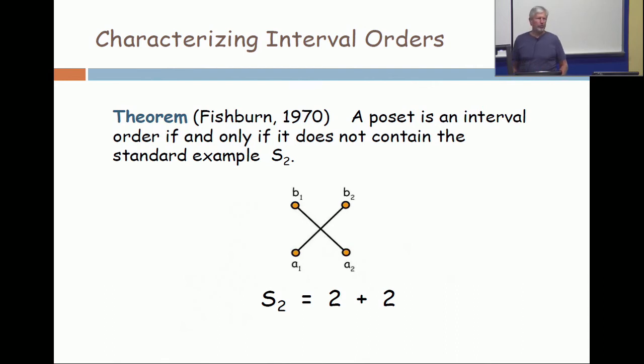And that's denoted S2, also denoted 2 plus 2. It's denoted 2 plus 2 because if you take two chains like this and draw them like this, you see a two-element chain and another two-element chain with no connection between them. In poset language that's called the plus, the disjoint sum. So that is the disjoint sum of two two-element chains. A poset is an interval order if and only if it does not contain 2 plus 2.